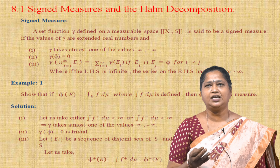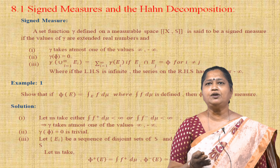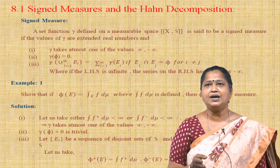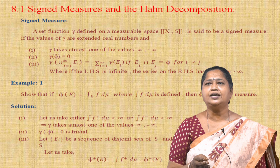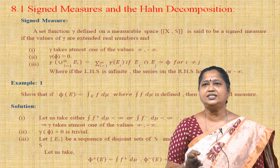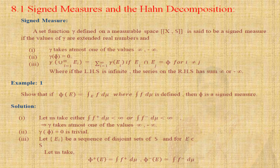The second one: ν(∅) = 0. The third one: ν(∪_{i=1}^{∞} E_i) = Σ_{i=1}^{∞} ν(E_i), if E_i ∩ E_j = ∅ for i ≠ j. If the left hand side is infinite, the series on the right hand side has some +∞ or −∞. The only variation is signed measure allows the negative values also. This is the difference between the measure and signed measure.